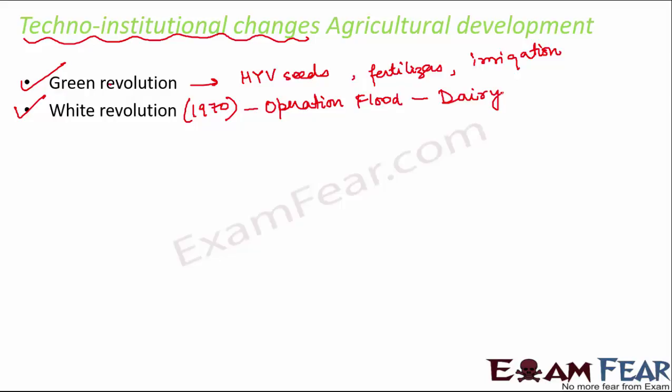In white revolution, a milk grid was created such that producers — those actually handling the production of milk from dairy animals — were linked directly with consumers throughout India. The middlemen were cut out. The moment middlemen were removed, the regional as well as seasonal price for milk got reduced, and as a result milk became accessible to every section of the population of India. Dr. Verghese Kurien is considered the main person behind white revolution.